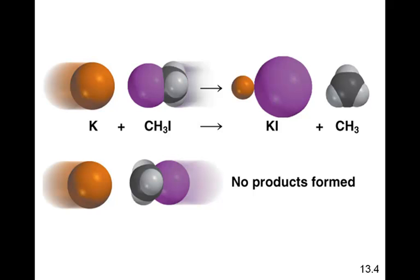This next slide will help us better understand orientation. The reaction shown is potassium reacting with CH3I to form KI and CH3. The K atom and the CH3I molecule — with carbon, three hydrogens, and iodine — are going to collide. The bonds between the I and the C are going to break, and the bond between the K and the I is going to form. In this collision, the K and the I are lined up so they collide with each other, the reaction proceeds, and we get KI and CH3.